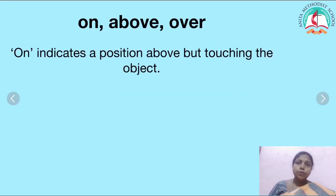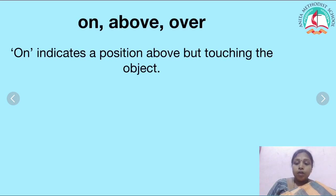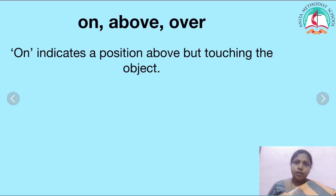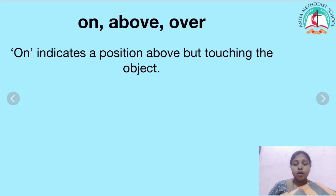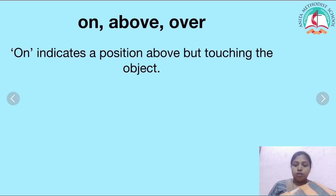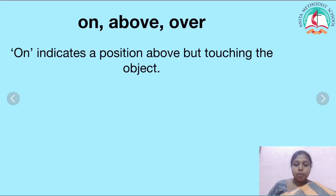Now let's see a few prepositions. Look at the slide. I have taken on, above, and over. All these are talking about only one thing — something which is above or on. Now we have to know where to use on, above, and over. Look at the definition for on. On indicates a position above but touching the object.